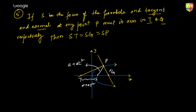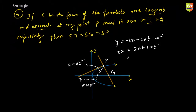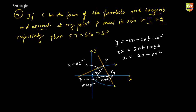Now what is SG? We know the equation of the normal is y = -tx + 2at + at³. Put y as 0, so x becomes 2a + at². Since S is at x = a, this distance is a + at² again, which clearly implies ST = SG = SP.